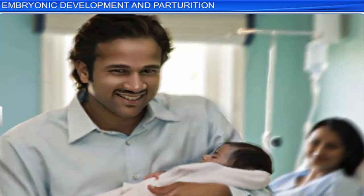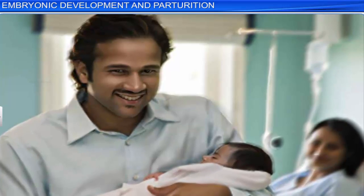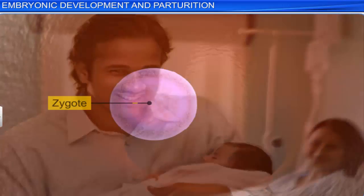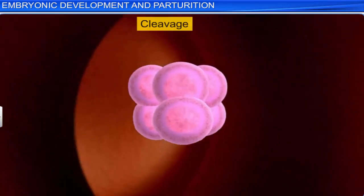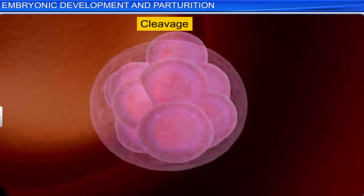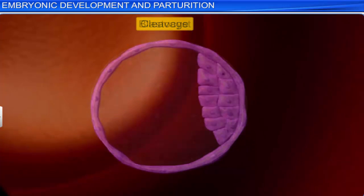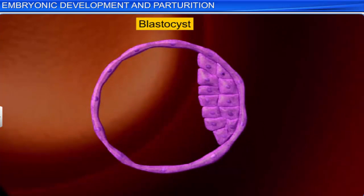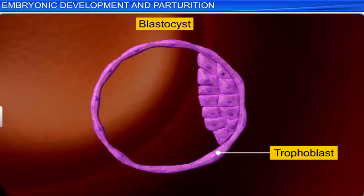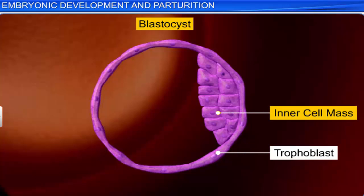The birth of a baby is an intricate and complex process that begins when the zygote undergoes cleavage and develops into a blastocyst — a hollow ball consisting of a trophoblast, an inner cell mass, and a cavity called blastocele.